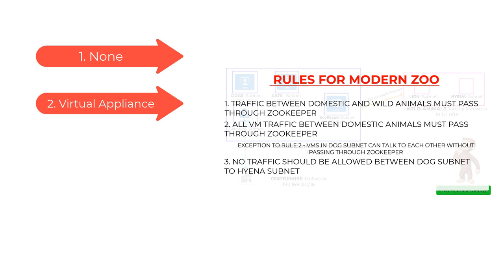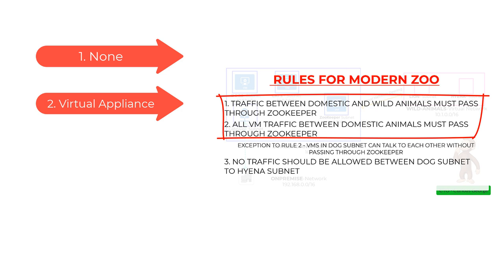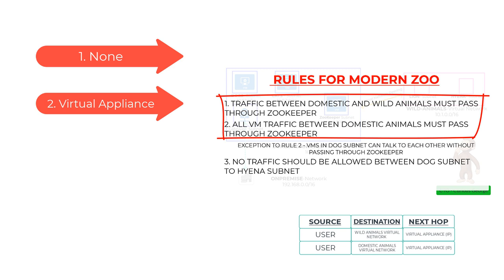The second next hop type is virtual appliance. When we set the next hop as virtual appliance and provide an IP address, the traffic gets routed through a network virtual appliance like the zookeeper before reaching its destination. To accomplish rule one and rule two, we will use this as the next hop — the address range of the Wild Animals Virtual Network with the next hop as the IP address of the virtual appliance, and similarly the address range of the Domestic Animals Virtual Network with the same next hop. We added this rule because rule two specifies that no two VMs inside the Domestic Animals Virtual Network can talk to each other.